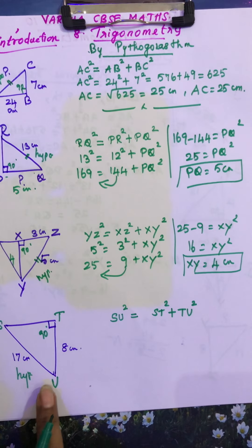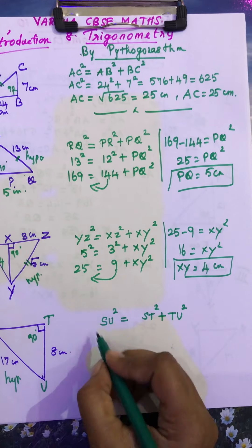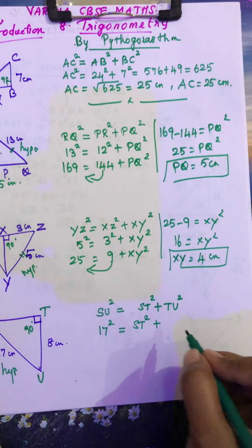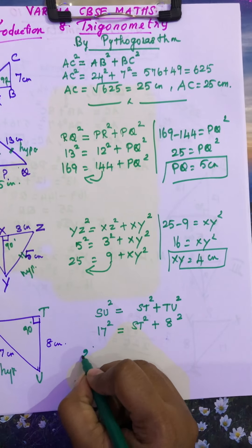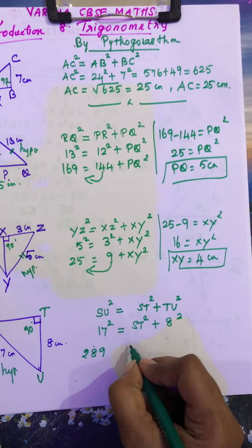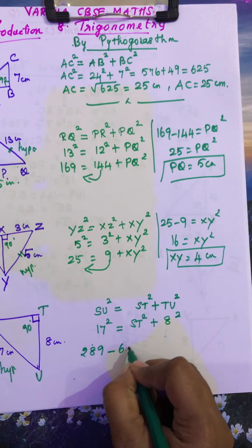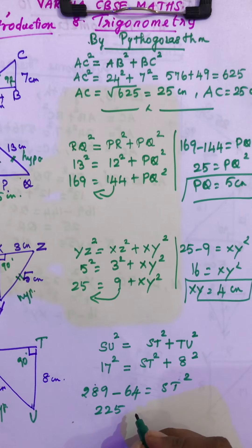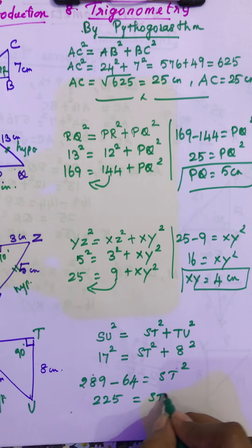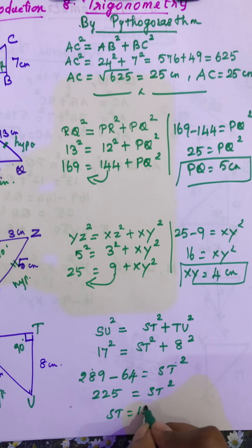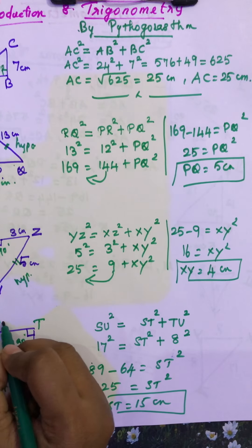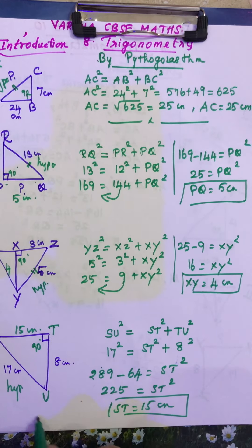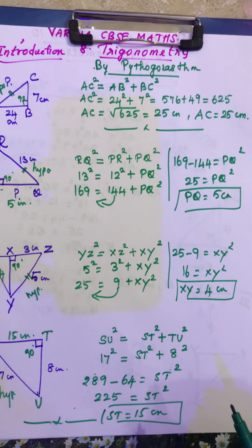Now go to the fourth and last triangle. SU = 17, so 17² = 289. ST is not given. TU = 8, so 8² = 64. So ST² = 289 − 64 = 225. Taking the square root gives 15 centimetres. So ST is 15 centimetres. In the fourth triangle we have found the missing side.